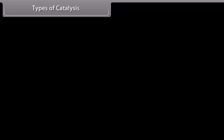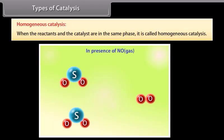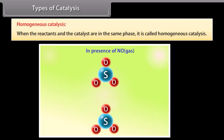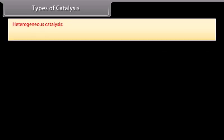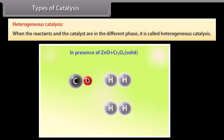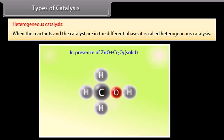Catalysis reactions are of two types: homogeneous catalysis and heterogeneous catalysis. In homogeneous catalysis, the reactants and catalyst are in the same phase — for example, oxidation of sulfur dioxide to sulfur trioxide in the presence of nitric oxide in the lead chamber process, where SO₂, O₂, and the catalyst (nitrous oxide) are all in the gaseous phase. In heterogeneous catalysis, the reactants and catalyst are in different phases — for example, manufacture of methanol from CO and H₂ using ZnO + Cr₂O₃ catalyst, where reactants are gaseous and the catalyst is solid.